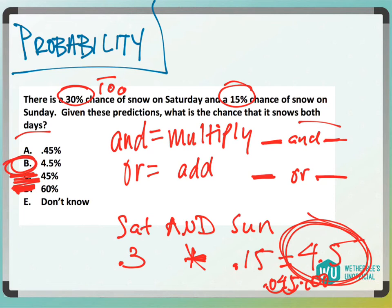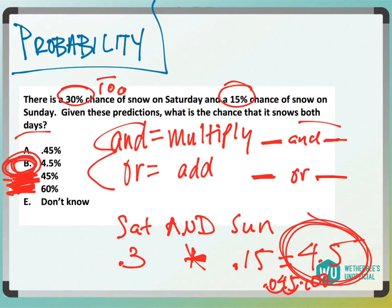Even if you're really confused on this, you should definitely know this, because you're going to see it on either test. Know that the probability that two things in a row are going to happen should be less than their individual probabilities, so you can cross off at least C and D for that reason. But the answer is choice B.